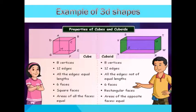Examples of 3D shapes. Cube and cuboid are common examples of 3D shapes. They are shaped like boxes. A cube has 8 vertices, 12 edges, all edges of equal length, 6 square faces, and the area of all faces is equal.